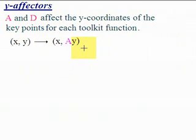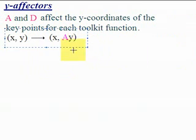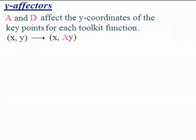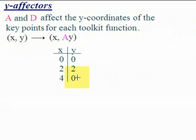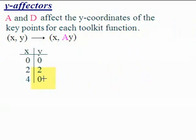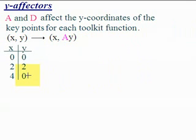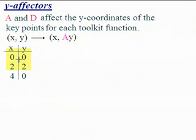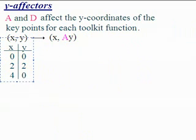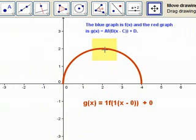For the A value, since it stretches, we take the ordered pairs of the original toolkit and multiply the Y values by whatever A is. The toolkit graph has four key points: (0, 0), (2, 2), and (4, 0). These are the key points for the original toolkit. A does two things: it stretches and flips vertically.